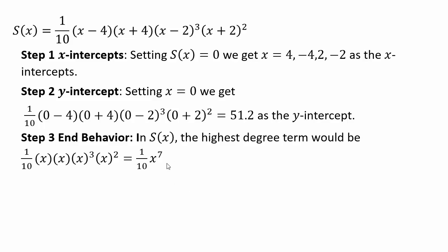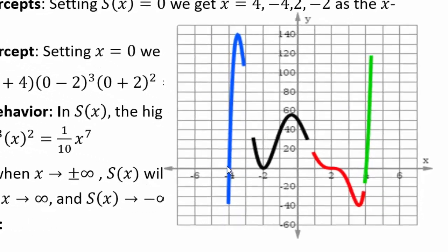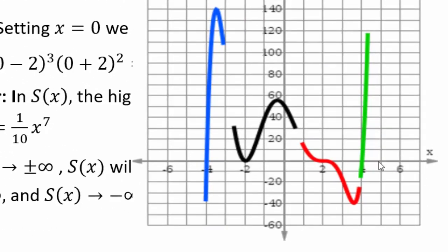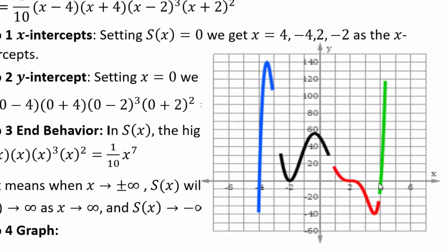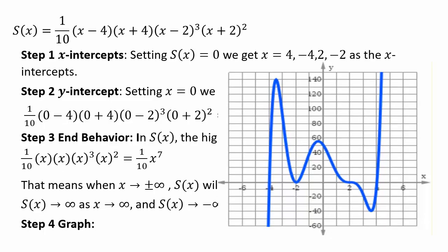Putting it all together: as x goes to infinity, the right hand is up; as x goes to negative infinity, the left hand is down. At x equals negative 4, the factor is linear so the graph crosses. At x equals negative 2, the even power gives a parabola shape. At x equals 2, the cubic power gives a cubic shape. At x equals 4, it's linear so it crosses again. Connecting all of that gives the final rough sketch.